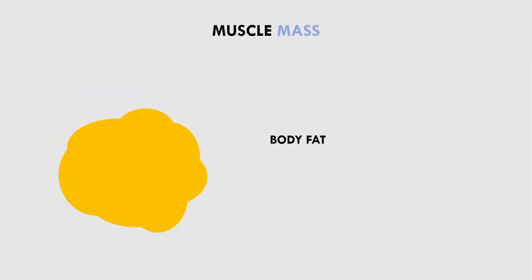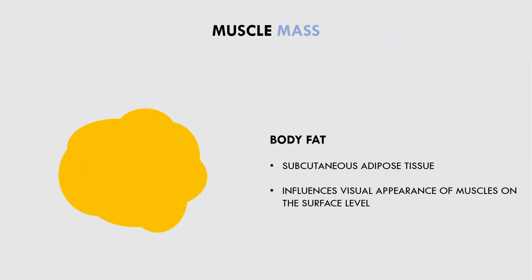The other tissue we are concerned with is body fat. This refers to adipose tissue located underneath the skin and above the muscles. Body fat will determine how much coverage we have over the muscles and other tissues. More body fat will result in reduced appearance of muscles, while less body fat will result in improved appearance of muscles. Generally, trainees seek a lower body fat level to make muscle mass more superficially visible.